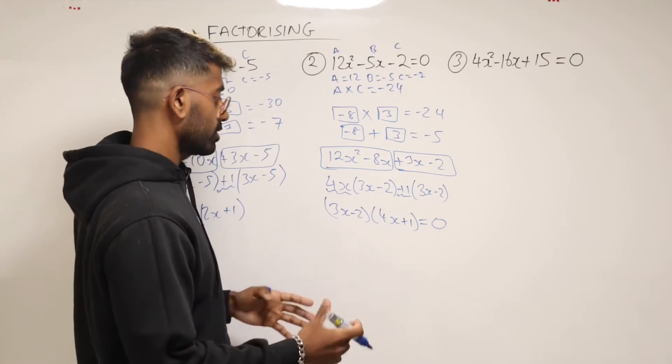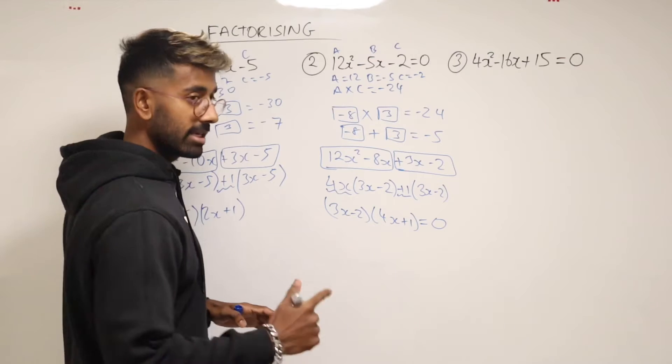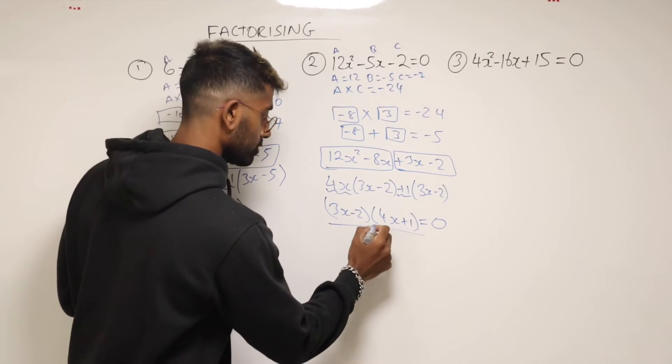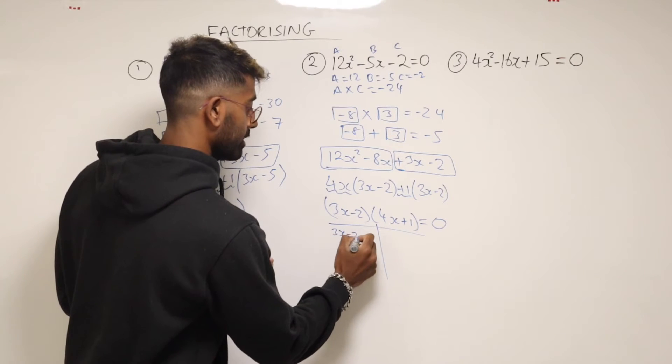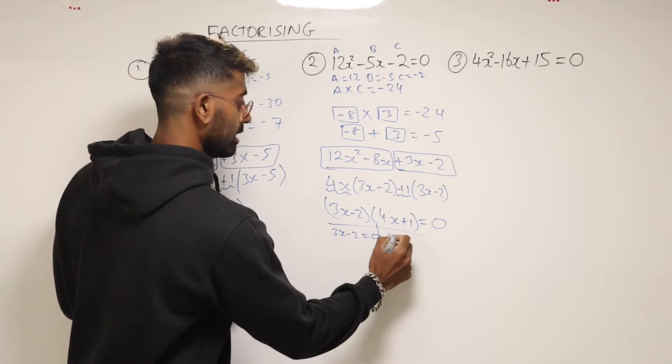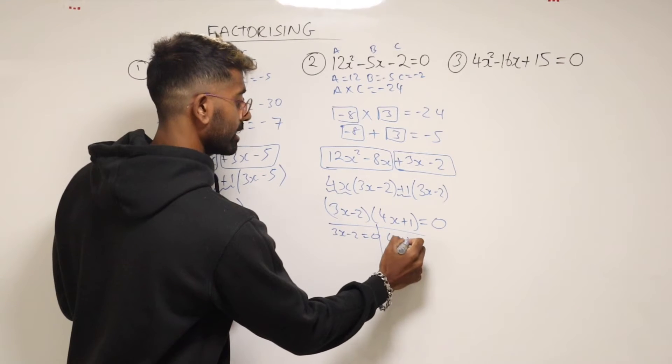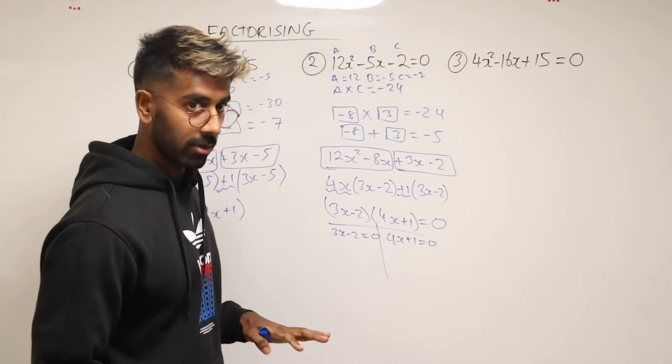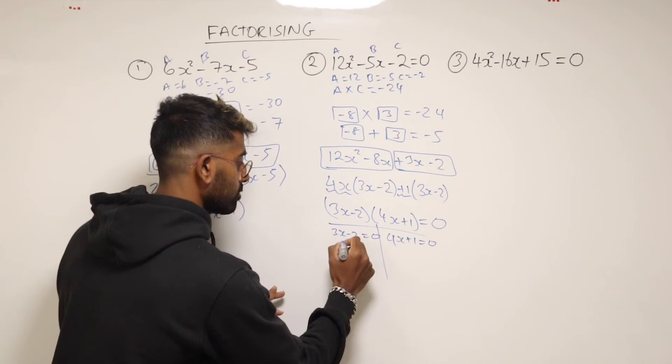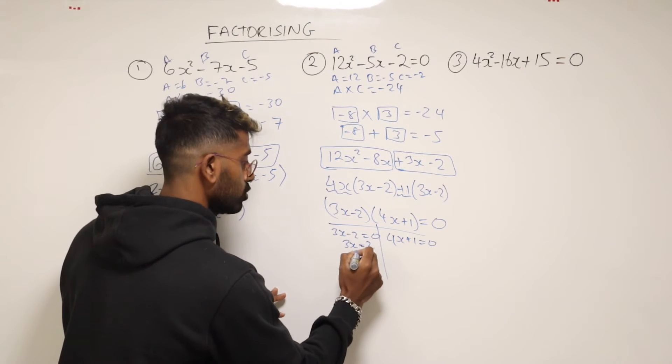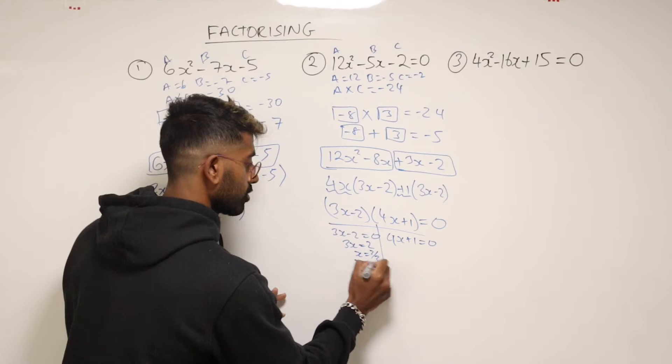Now, to solve this quadratic, what you need to do is take each factor and equal it to zero. So 3x minus 2 is equal to zero. And then 4x plus 1 equals zero. Send this minus 2 over. So 3x is equal to 2. And that means x is equal to 2 thirds.